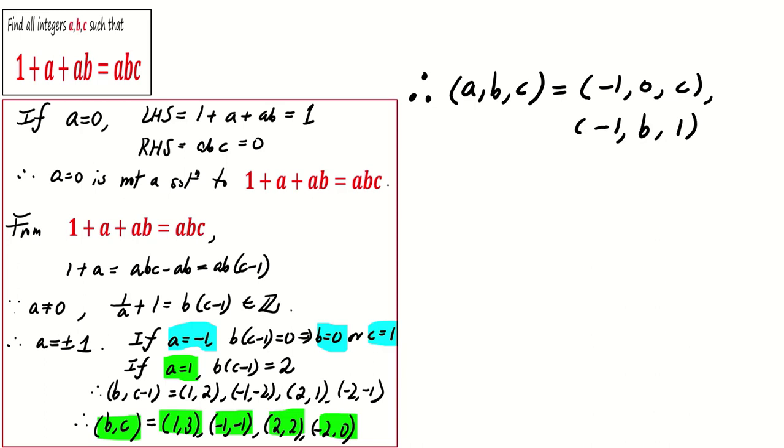Or (a, b, c) can be (1, 1, 3), (1, -1, -1), (1, 2, 2), and (1, -2, 0).